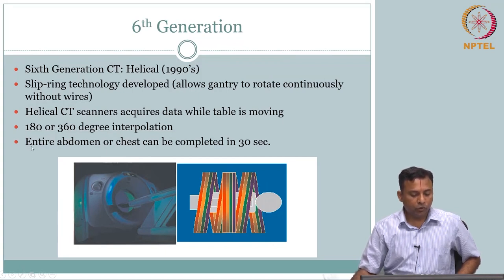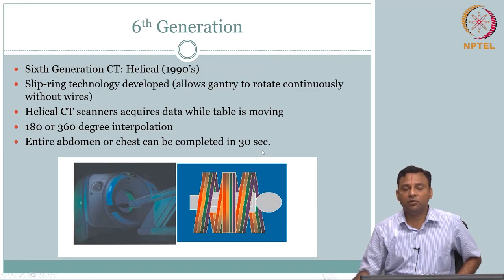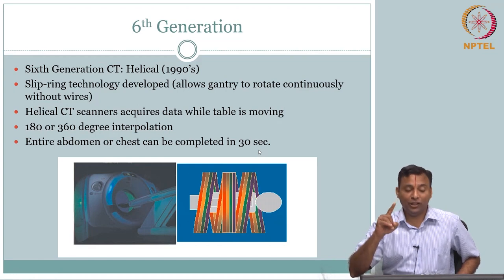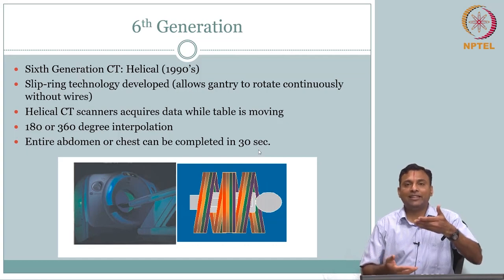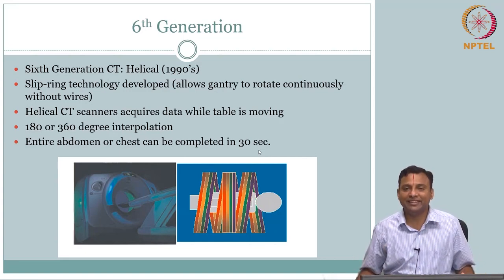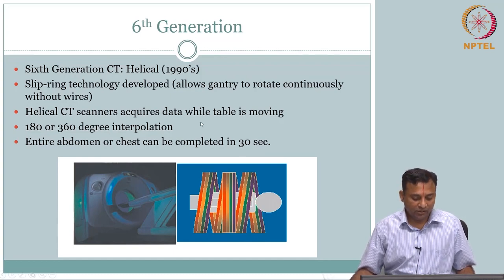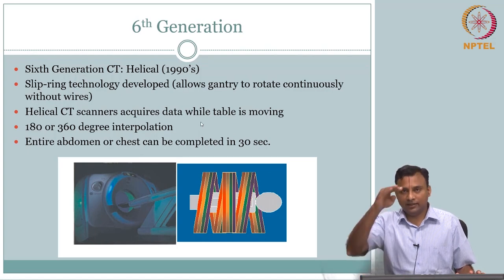So the helical scanner — you could get entire abdomen or chest completed in 30 seconds. Fantastic. We talked about second generation taking about 30 seconds, but that was one slice. Now you can get a whole chest or whole abdomen — several centimeters — in 30 seconds. But I would still like to have multiple slices. Can I do even faster? Yes — instead of moving the patient, can I have multiple detector rows? One row of detectors: can I have another row? If I have 2 rows, I have 2 slices recorded at the same time; if I have 3 rows, I get 3 slices at a time.